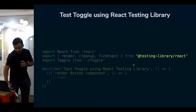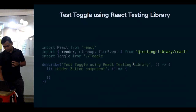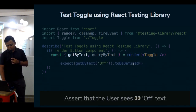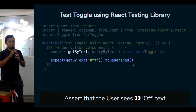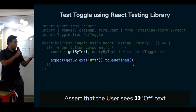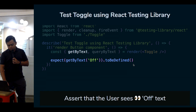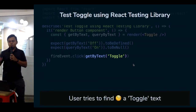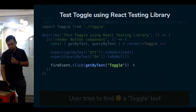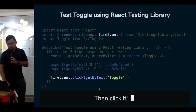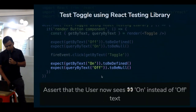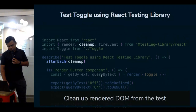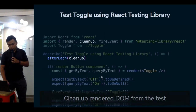Let's try testing using React Testing Library, which is getting more popular in recent years. We use the render function to render the component, then get the text value. We assert that the 'off' text is present and the 'on' text is not. We find the toggle button by its text, click it, and assert that it shows 'on' instead of 'off'. At the end of the test we clean up the DOM so the test is isolated.